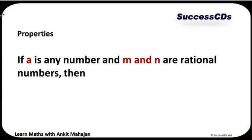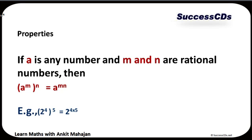The next property is the power property. If I have a number like a raised to the power m, raised to the power n, then the powers have to be multiplied and not added — giving a raised to the power m into n. For example, 2 raised to the power 4, raised to the power 5, I can write it like 2 raised to the power 4 into 5, which comes out to be 2 raised to the power 20.